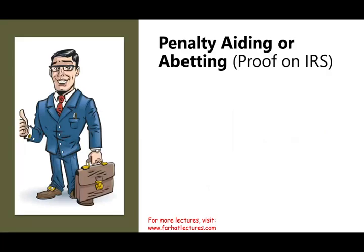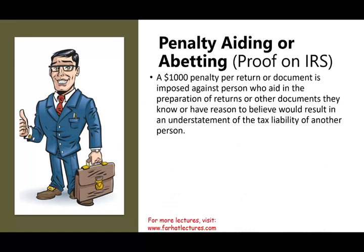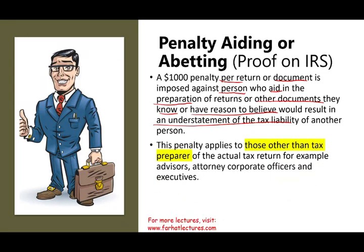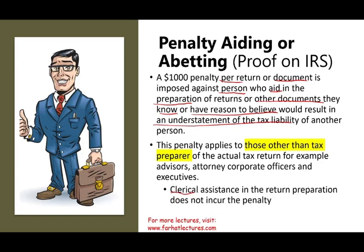There is also a penalty for aiding or abetting, and here the burden of proof is on the IRS. This penalty is $1,000 per return or document and is imposed against any person who aids in the preparation of a return — you don't have to be the tax preparer — if they knew or had reason to believe it would result in an understatement of tax liability. Simply put, someone giving you a fraudulent tip to reduce taxes. This applies to advisors, attorneys, friends, corporate officers, executives — anyone. However, if you are only involved from a clerical assistance perspective, you don't incur the penalty.